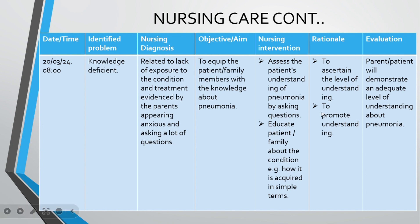Under nursing interventions, first assess the patient's and parents' level of understanding about pneumonia by asking them questions — for example, what do you know about pneumonia and how does it come about? We do this because some may have wrong assumptions about the condition. It is our responsibility to explain how it comes about in simple terms so they understand the situation their child is in.